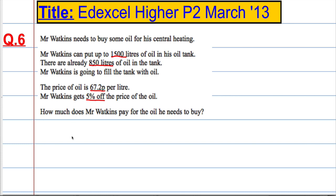The first thing to work out is how many litres of oil he is going to buy in order to fill the tank. The capacity is 1500 litres, he already has 850 litres. So 1500 take away 850 is going to give him 650 litres to buy. So he needs to buy 650 litres.